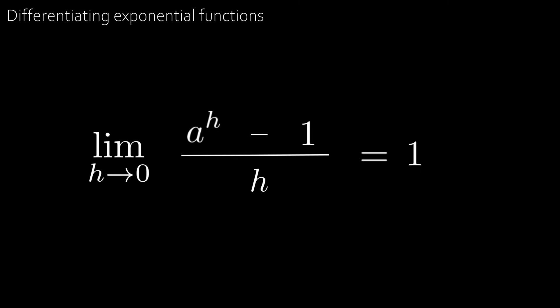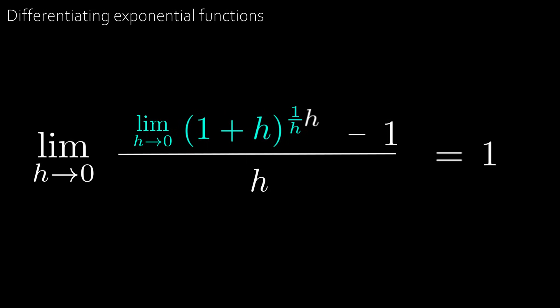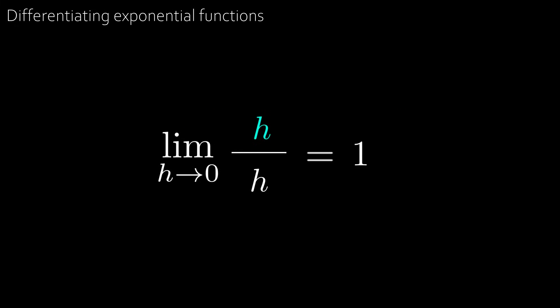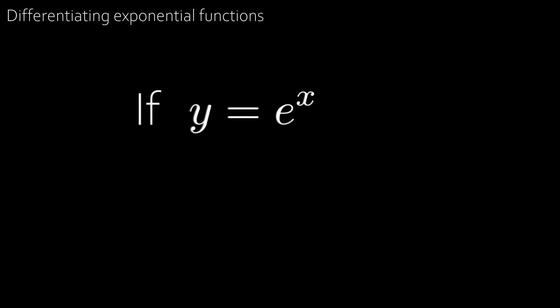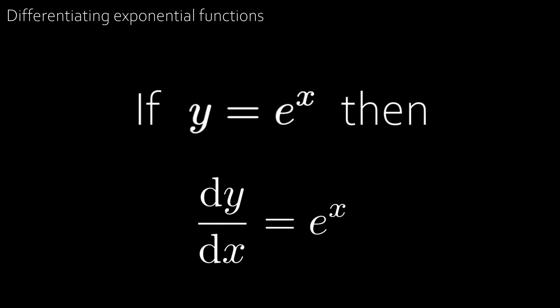Let's try a = e, Euler's constant. We remember that e equals the limit as h→0 of (1 + h)^(1/h). We don't need to write the same limit twice, and h cancels in the exponent. Then the ones cancel in the numerator, leaving the limit as h→0 of h/h. Since h/h = 1 and there are no h's left, we can remove the limit and get 1. This means if y = eˣ, then dy/dx = eˣ.